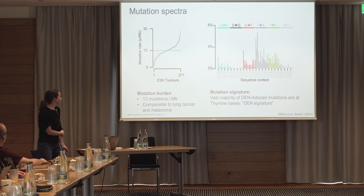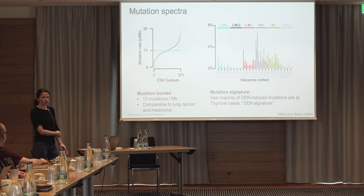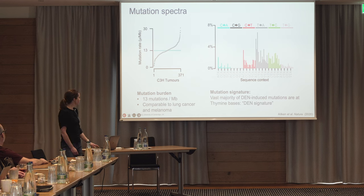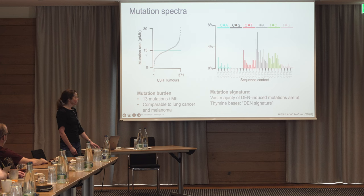First, looking at the mutations, we started with the basics: how many mutations are there and what do they look like? Working with 371 tumours, the mutation rate is quite variable, but on average there's about 13 mutations per megabase.